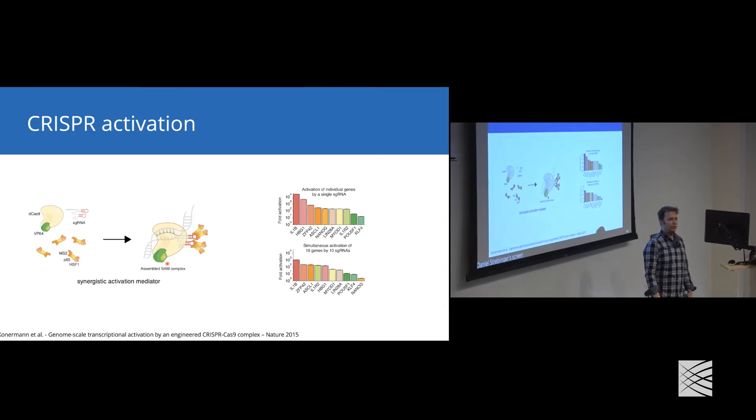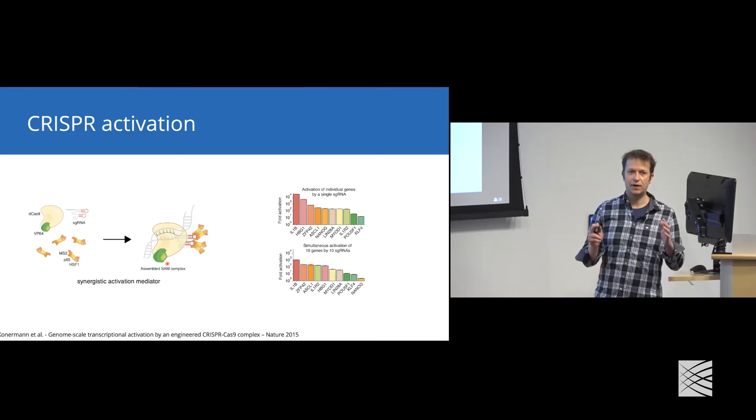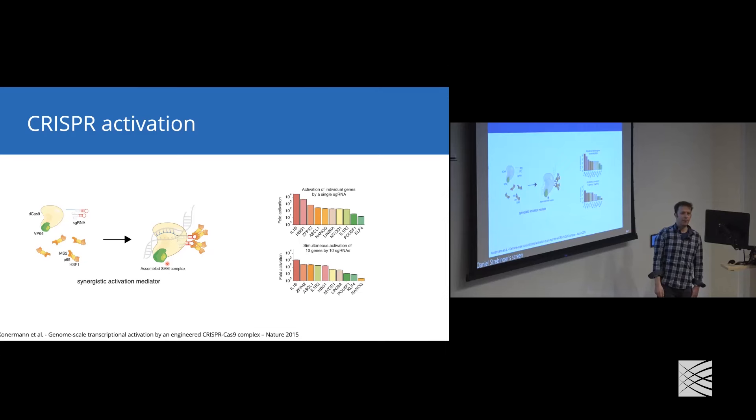This whole complex is called Synergistic Activation Mediator Complex or SAM Complex, which allows you to target Cas9 and basal transcription machinery to genes. You need to target the upstream region, the promoter region of a gene. Then you can evaluate whether you see activation of the target gene. In this upper panel, you can see the fold activation of target genes upon introduction of the system with single guide RNAs targeting one locus at a time. What's very nice about the system is it's highly multiplexible. By putting all these guide RNAs together into the same cell, we can get activation of all these genes in the same cell.